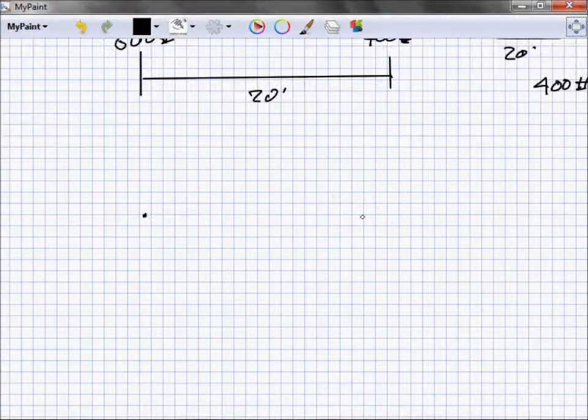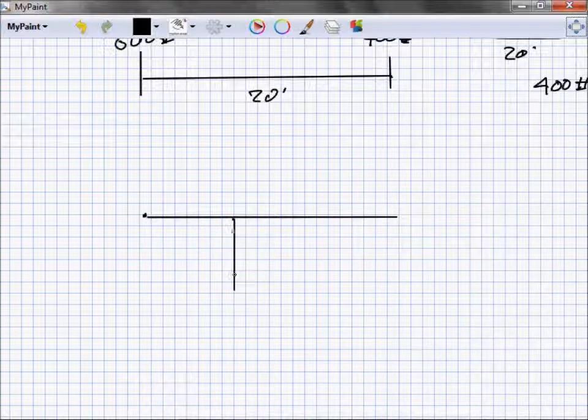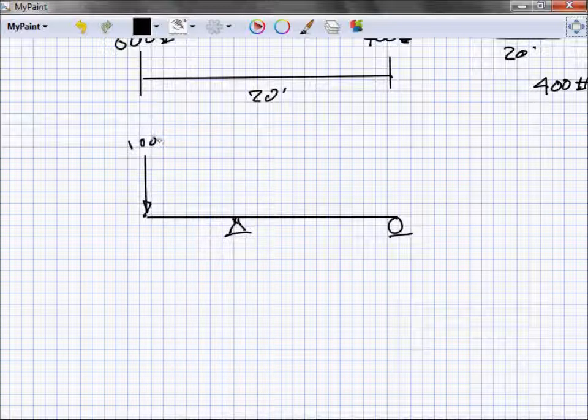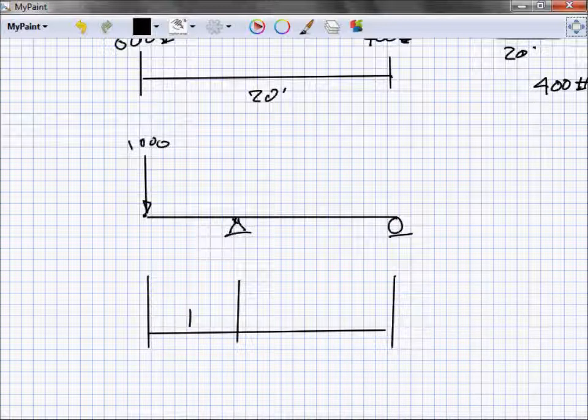What if we modify this thing a little bit and call it a cantilever? Does it get harder or easier or stay about the same? First thing, what is the first thing we do? Replace these with arrows. Do I need a horizontal arrow here at this pin? It should have one, but I don't have any other horizontal loads in this whole thing so we're not going to worry about it.